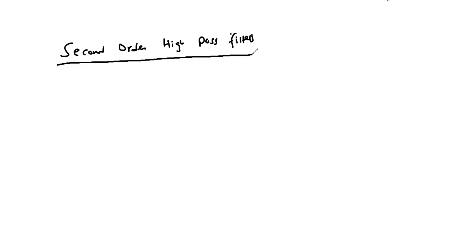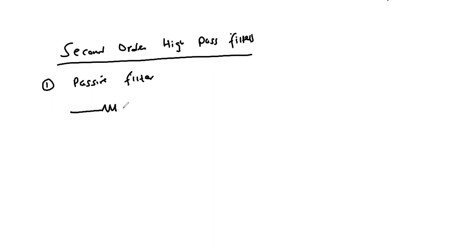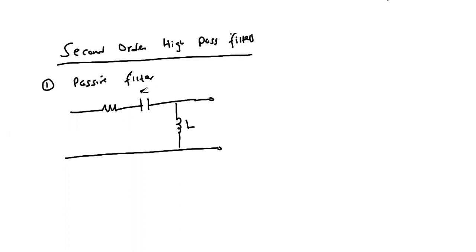For the second order high pass filters we look at them in two categories: the passive second order high pass filter and the active second order high pass filter. For the passive form, the simplest second order high pass filter constitutes of a resistor, capacitor, inductor network with all the components in series, but the output taken across the inductor. So we have resistor, capacitor, and inductor in series. This is the input and this is our output.